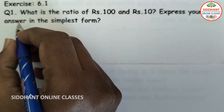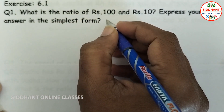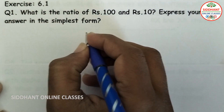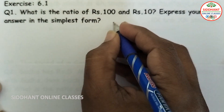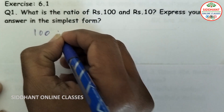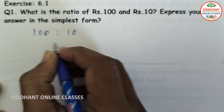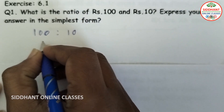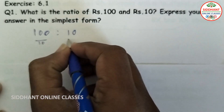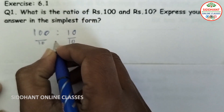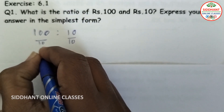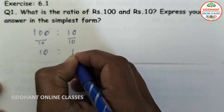Exercise 6.1, Question number 1: What is the ratio of rupees 100 and rupees 10? Express your answer in the simplest form. So the ratio of rupees 100 and 10 — when you divide both these numbers by 10, we get 10 is to 1.